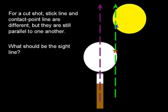Things are different when you go to a cut shot. As you can see here, the stick line and the contact point line are no longer the same. They're separated from one another. But importantly, they are parallel to one another. For a given shot, such as the one shown here, any valid aiming system must get to this stick line and get to this contact point line, or else the shot's not going to go where it needs to go. From this point, the only thing that can differ about one aiming system from another is the sight line.